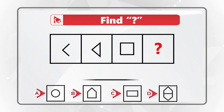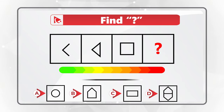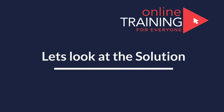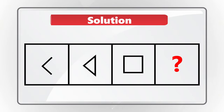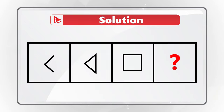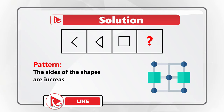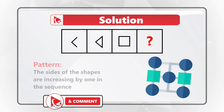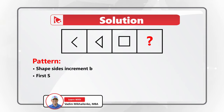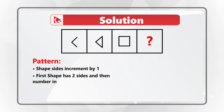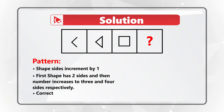Give yourself a little bit of time — maybe pause this video — to see if you can come up with the solution. The key to solving these types of challenges is to find the pattern. The pattern here is that the sides of the shape increase by one in each sequence. The first shape has two sides, then three, then four. So the missing shape should have five sides. Only shape B has five sides.